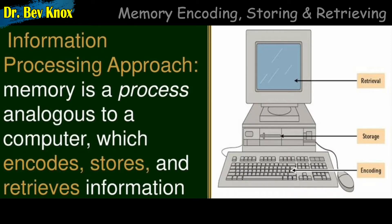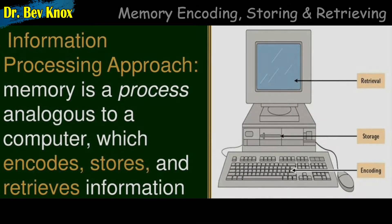Recognizing that memory involves encoding, storage, and retrieval gives us a start in understanding the concept. But how does memory actually function? How do we explain what information is initially encoded, what gets stored, and how it is retrieved?